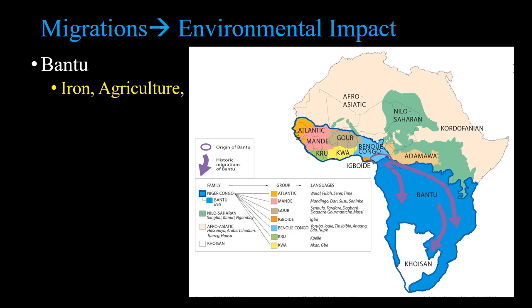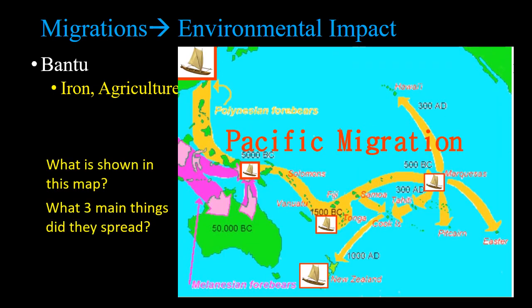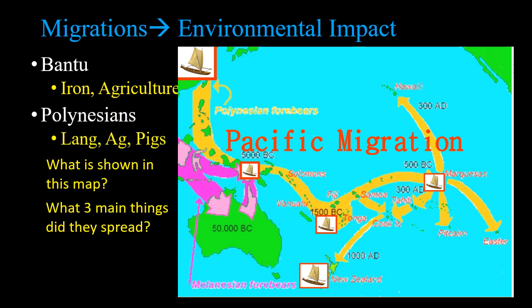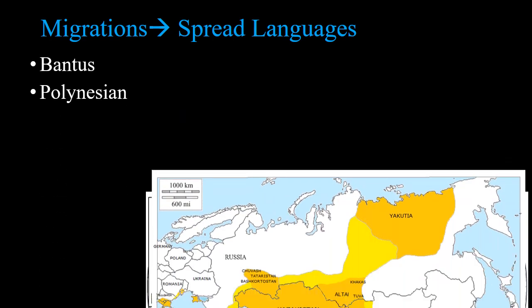The Bantus spread iron, agriculture, and language. The Polynesians similarly spread across the Pacific — they spread language, agriculture, and pigs. So migration spread languages: the Bantus spread their language, the Polynesians spread their language.